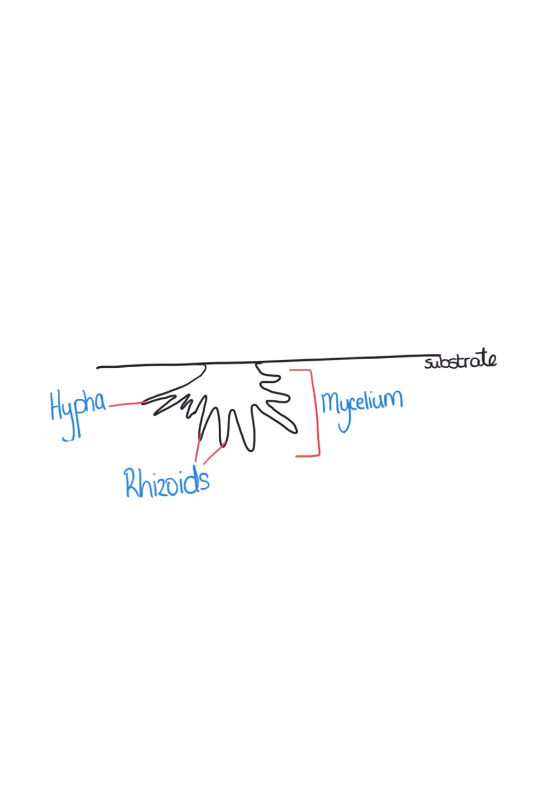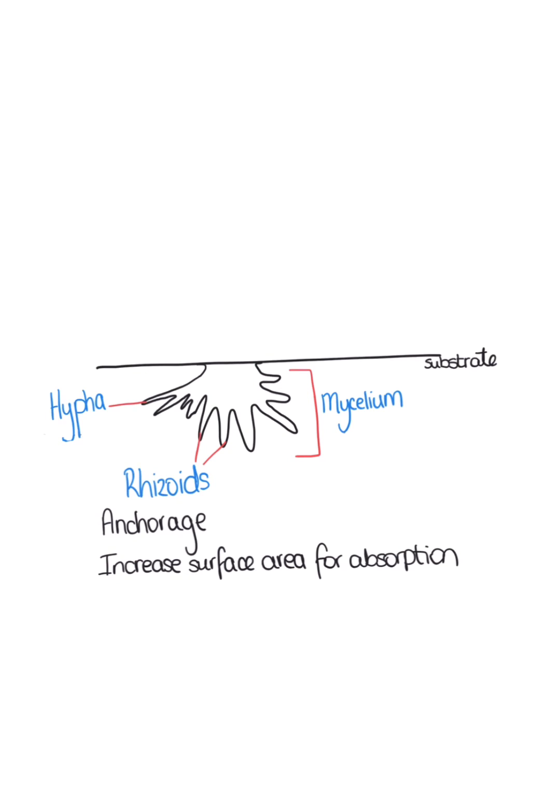Rhizoids are a type of hyphae that anchor down into the substrate. They increase the surface area for the absorption of nutrients.